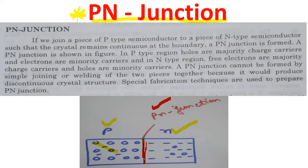I repeat: when we have a single crystal of germanium or silicon and dope it such that one half is doped with trivalent impurities and the other half is doped with pentavalent impurities, then the boundary between P-type and N-type is called P-N junction.